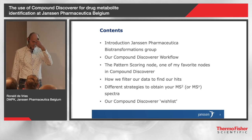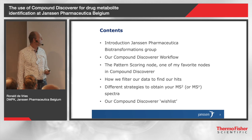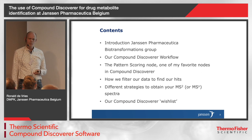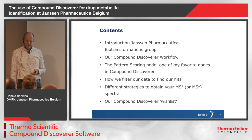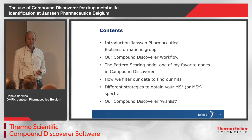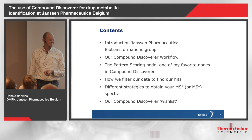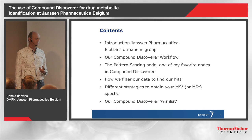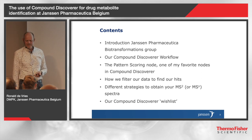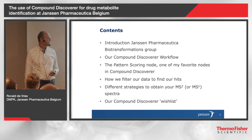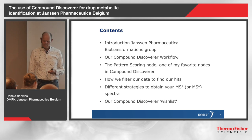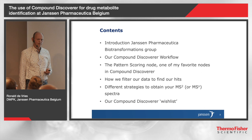So this is the contents of my talk. First, a small introduction of the group I'm working in and the kind of work that we're doing, then something about the Compound Discoverer workflow that we use for the MetID work that we do. Then I'd like to take a deeper dive into the pattern scoring node, which is one of my favorite nodes in Compound Discoverer. A small word about how we filter our data to find our hits, different strategies that we use to obtain our MS2 or MSN data, and finally our Compound Discoverer wish list.